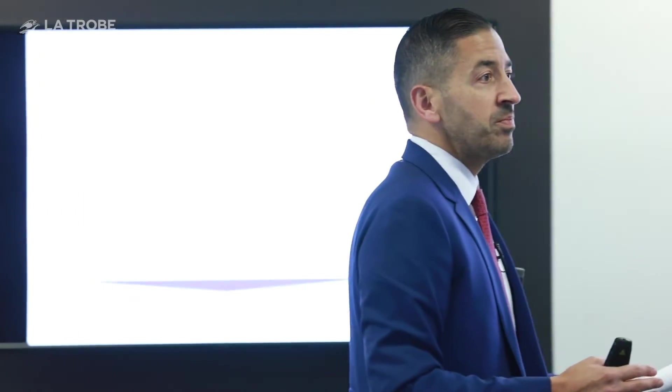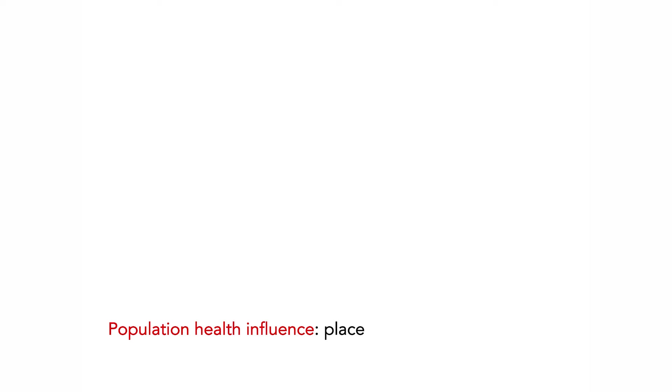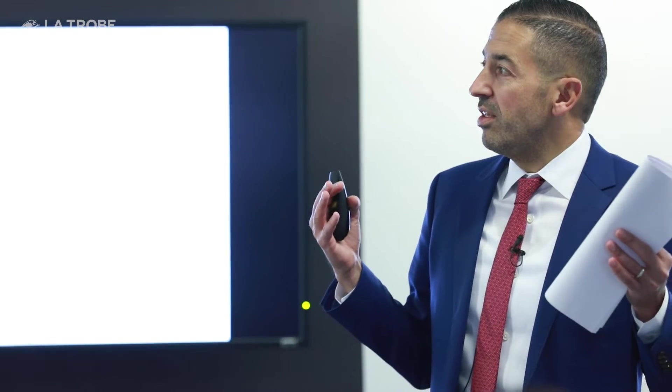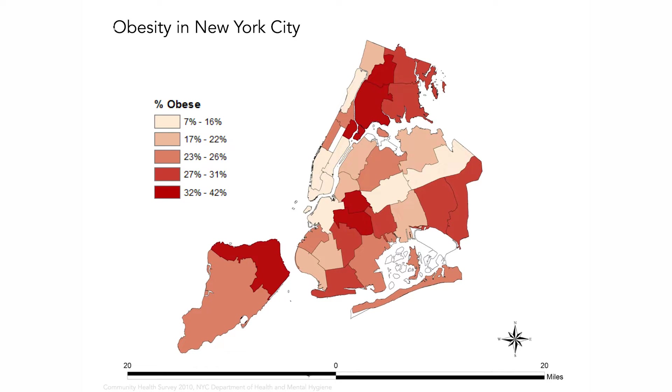Populations are complex systems. If we're interested in population health, we have to reckon with the complex nature of populations. Now let's talk about a couple of influences on populations where the complex systems lens becomes important. Populations are influenced by place — and I could spend a whole hour on this. Here's just one example: obesity in New York City ranges from 7% in some neighborhoods to 42% in others — a five-to-six-fold difference, within three to five miles of each other. This is the influence of place.